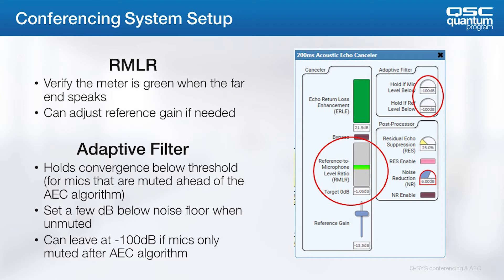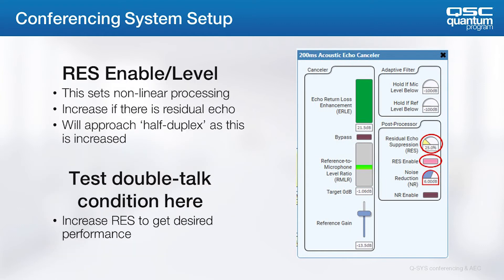Starting in Q-SYS version 8.1, there's also a setting to hold the AEC convergence if the reference level goes below a certain level. This is useful if the far-end signal must be muted before it hits the AEC reference block. If there's still some residual echo to your far-end test caller, then it's time to engage residual echo suppression, or RES. First, use the button to enable the feature, then engage only enough to remove the residual echo.